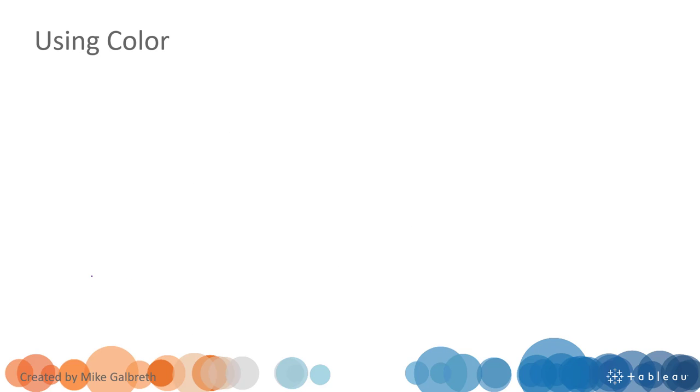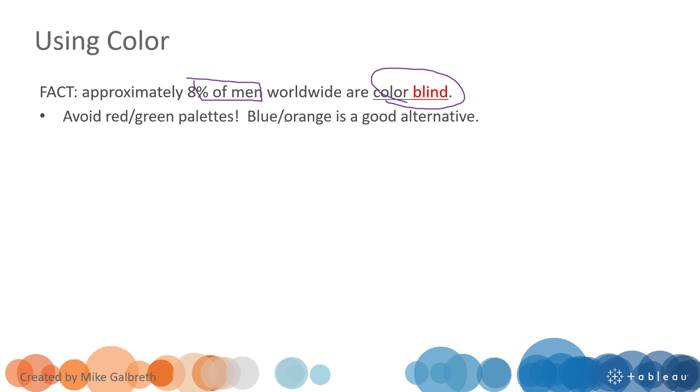When we use colors, also just keep in mind that almost eight percent of men are colorblind. So we should try to avoid using the red and green color combination. Instead we should use blue-orange as a good alternative, because almost eight percent of men cannot distinguish red and green.